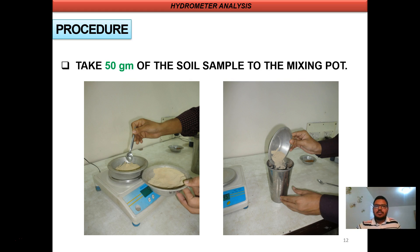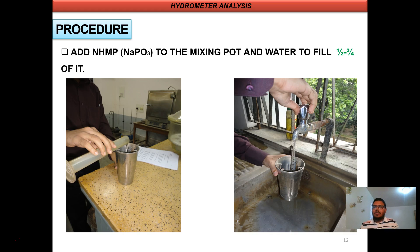Let's discuss the procedure for this experiment. At first, we will take 50 grams of soil sample and we will put the soil in a mixing cup. Then, we will put 125 ml of dispersing agent and we will mix it with distilled water and fill around half to three-fourths of the cup.